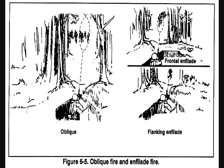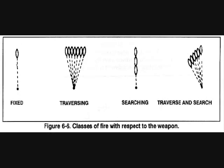B3 — oblique fire. Oblique fire is when the long axis of the beaten zone is at an angle other than a right angle to the front of the target. B4 — enfilade fire. Enfilade fire is when the long axis of the beaten zone coincides, or nearly coincides, with the long axis of the target. It is the most desirable type of fire with respect to the target, because it makes maximum use of the beaten zone — the target will be fully saturated with gunfire and can be wiped out with a single burst. Enfilade fire can be directed at either the front or side of the target.